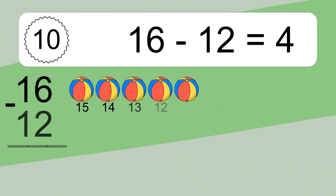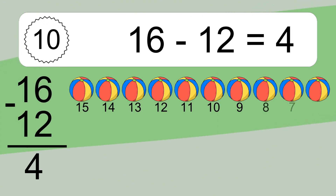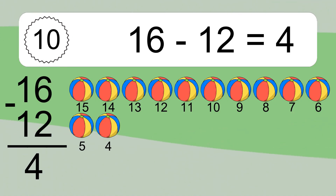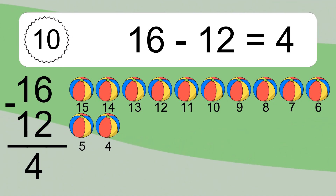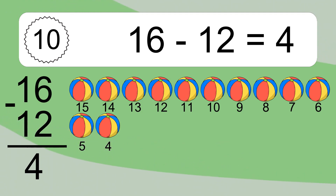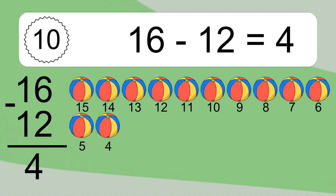16 minus 12 equals 4. Let's count it: 15, 14, 13, 12, 11, 10, 9, 8, 7, 6, 5, 4.